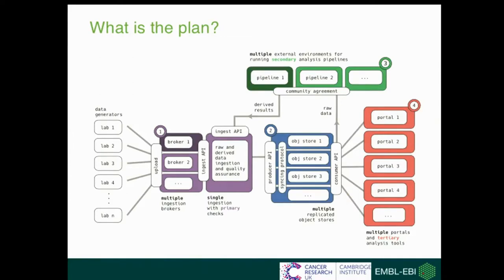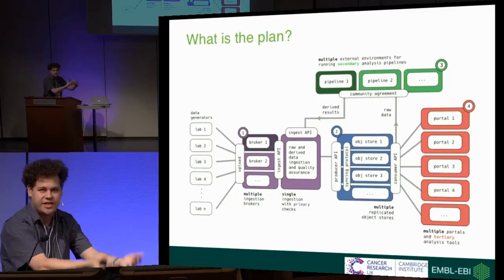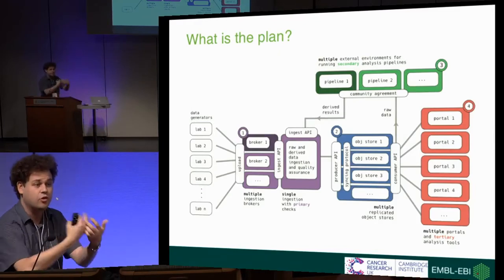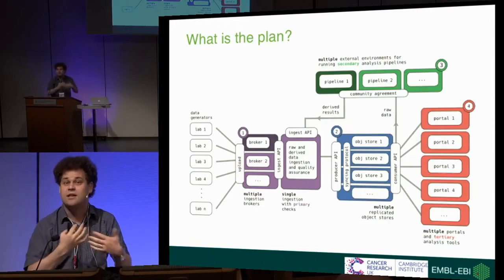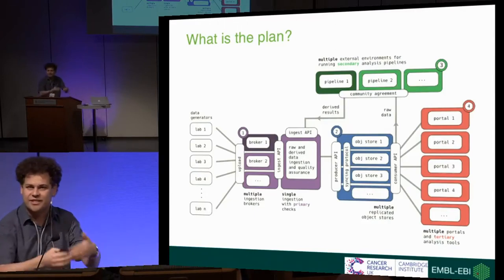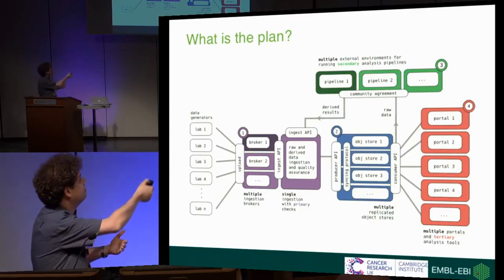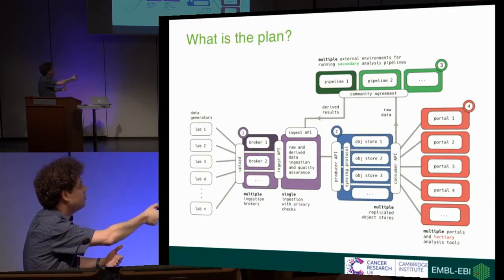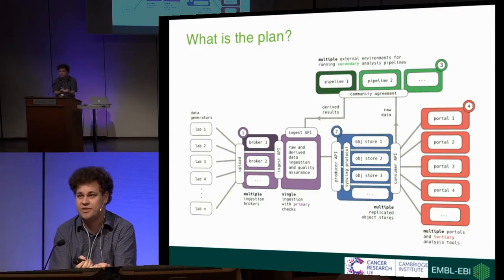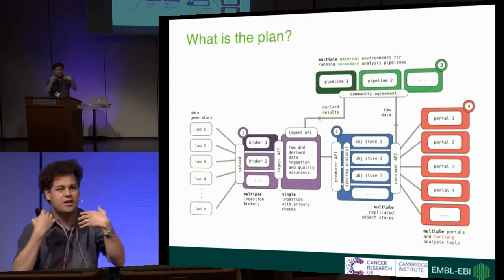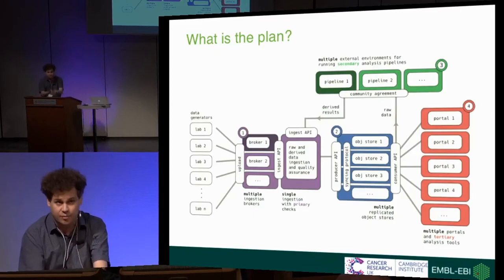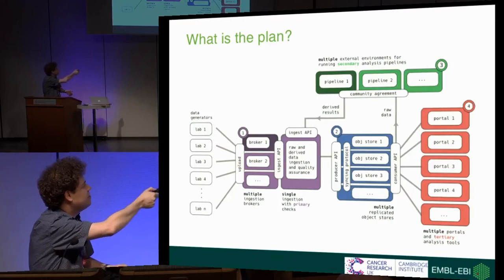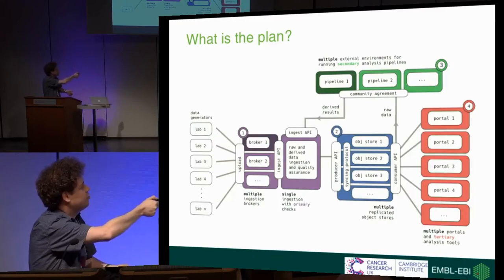We anticipate the data generators here on the left-hand side — they'll generate their data. In the short term, we anticipate this being single-cell RNA sequencing. In the longer term, this will also stretch to imaging data, proteomics data, and other modalities that are hard to anticipate because the technology moves so fast. Having generated these data, they will be uploaded via multiple different brokers. The different brokers could be catered to different types of technology or cell types — you might have an immune cell broker or a blood cell broker.